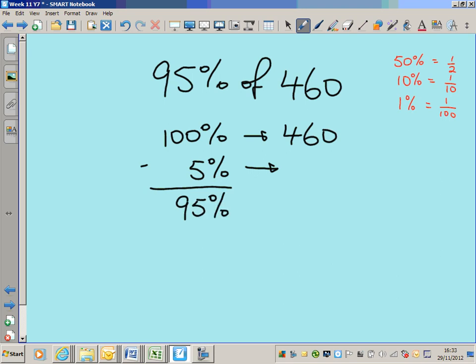So all we need to do here is find 5% of 460. What's 10% of 460? It's 460 divided by 10, which is 46. And half of 46 is 23. So 5% of 460 is 23.